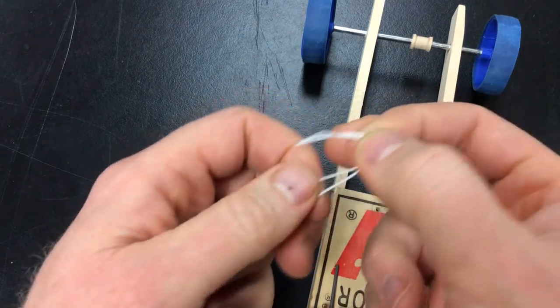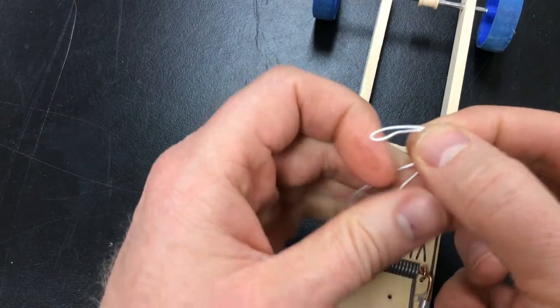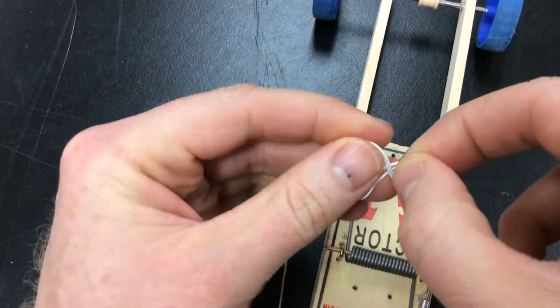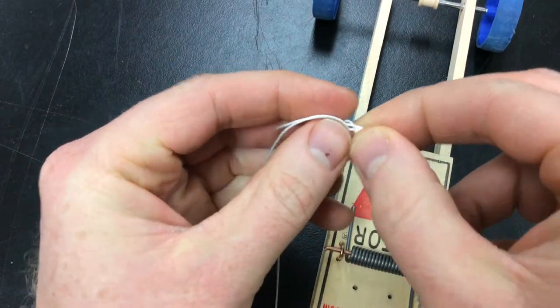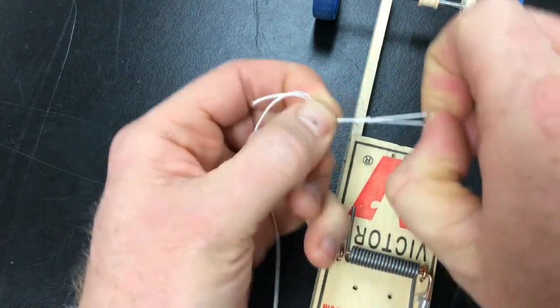So if I hold the end of that loop in place as I tie a simple overhand knot, that should keep the distance the same.